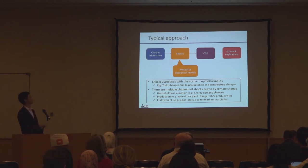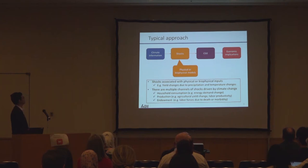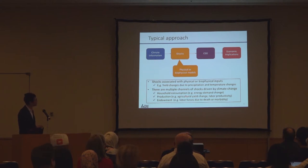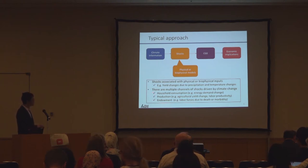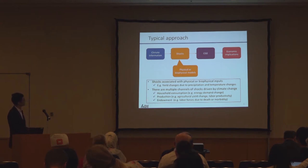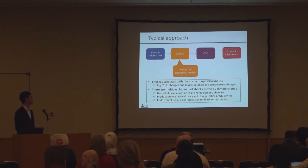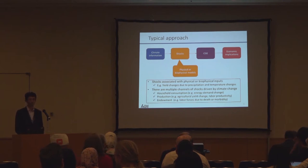And then we have welfare or GDP losses. That's one example, and there are multiple channels of shocks into this CGE. One can be production, as I said, but another is household consumption — temperature change causes energy demand, which affects the household consumption function. The other is endowment: labor forces could be affected by climate changes. For example, people die from flood or heat excess mortality and so on.